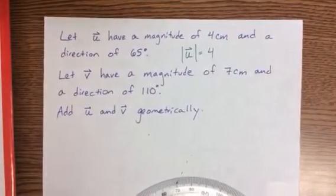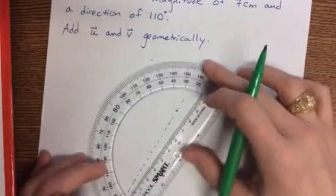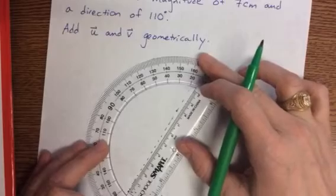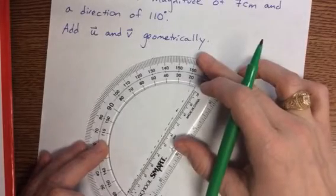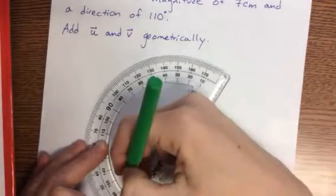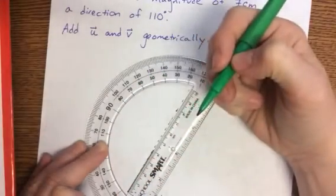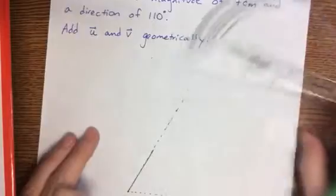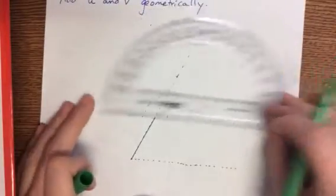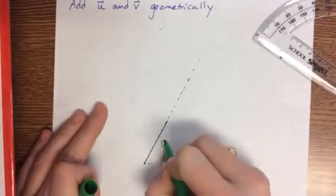They told us that it had a magnitude of 4 centimeters. So I'm going to come through here and inside of my protractor is this little scale here. So this should get me hopefully to about 4. I hope you can see what I'm doing. And then from here, this is vector u. So I'm going to label that.